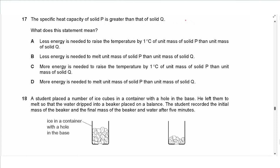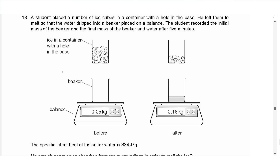Question 17 says: the specific heat capacity of solid P is greater than that of solid Q (cp > cq). What does this mean? Less energy is needed to raise the temperature of unit mass of P than Q — no, since P has a greater specific heat capacity it needs more energy, not less. More energy is needed to raise the temperature of P than unit mass of Q — yes. So the answer is C.